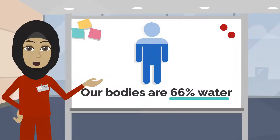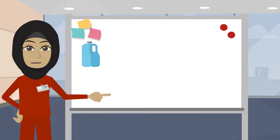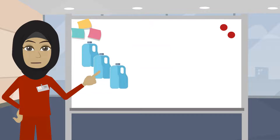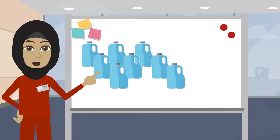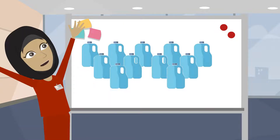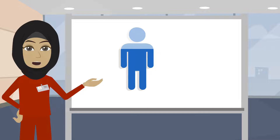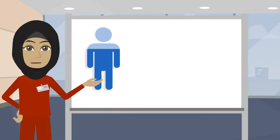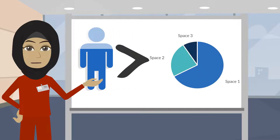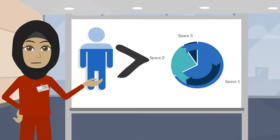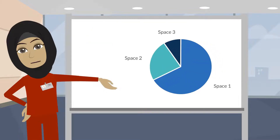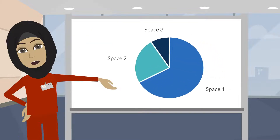Our bodies are about two-thirds water. On average, that is about 42 liters, or 11 gallons — that is a lot of water. But this water does not move around freely. The water in our body is in three main spaces and it constantly shifts from one space to another. Let's look at each space and see where the water is.